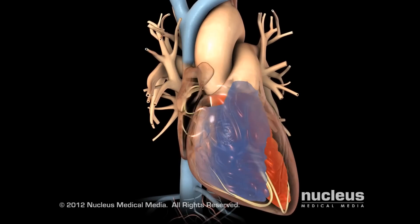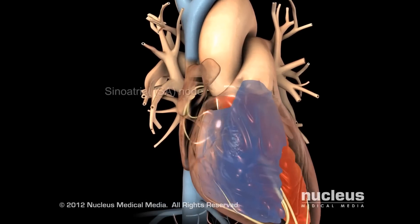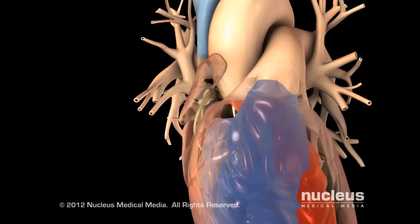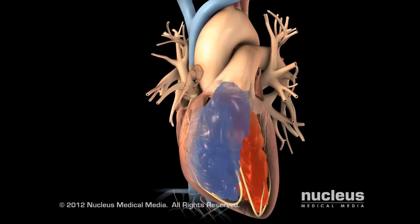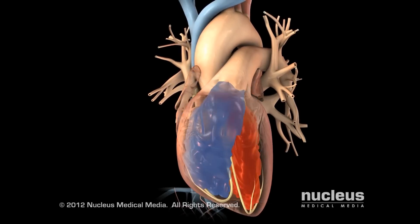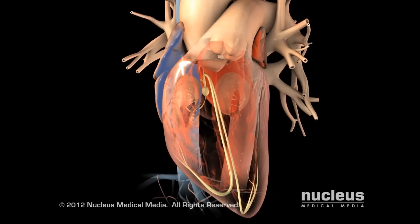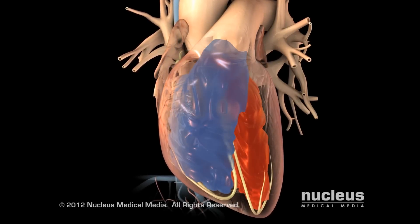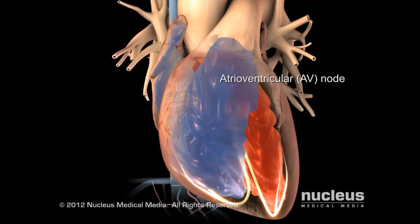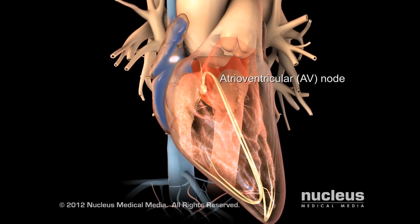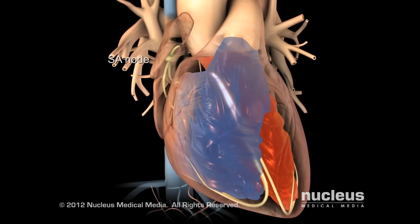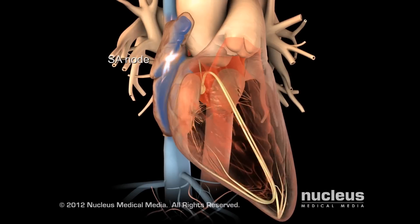Each heartbeat begins in the heart's natural pacemaker, called the sinoatrial, or SA, node, located in the wall of the right atrium. An electrical signal starts here, then spreads across both atria, causing them to contract and push blood into the ventricles. As the atria relax, the signal travels through the atrioventricular, or AV, node to the ventricular walls, causing them to contract. The ventricles relax, completing one full heartbeat. Immediately, the SA node generates a new electrical impulse, repeating the pattern.